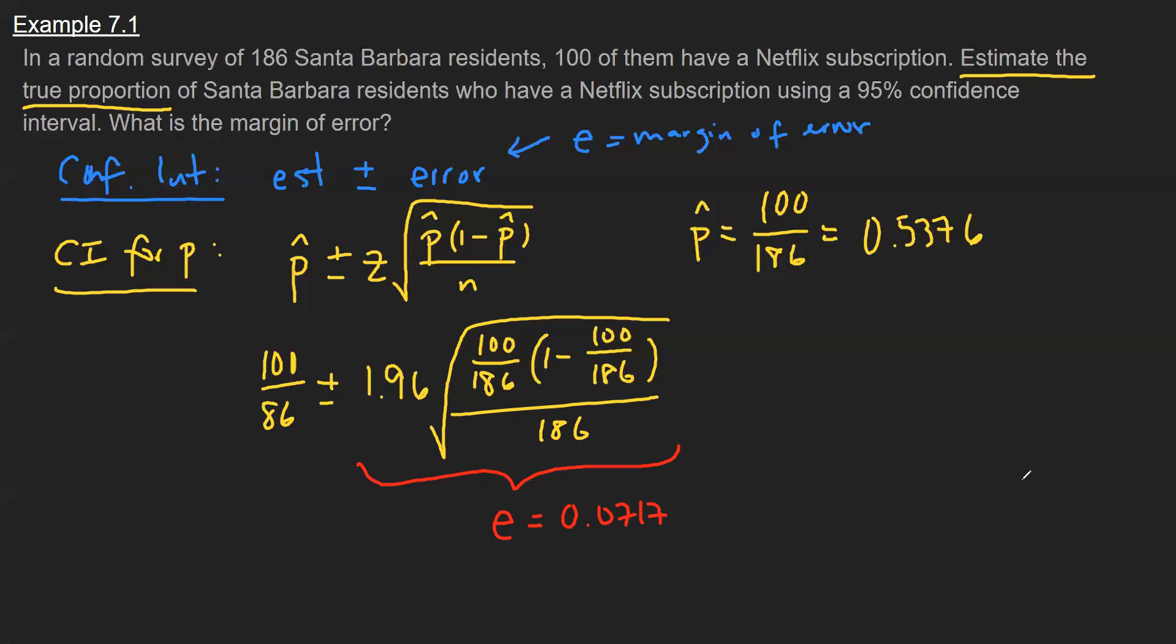So at the end of the day, when I plug in all the values, I get a point estimate of a little over 53%, so 0.5376. And then potentially off by that margin of error of 7% around here. And then adding and subtracting in the margin of error will allow me to build my interval.